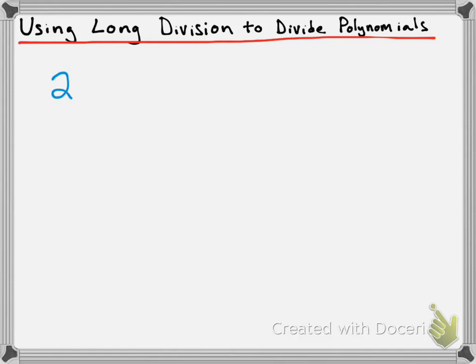Suppose for a second that we want to divide 2 into 4,347 using long division. You might remember the kind of process for this, but let me just refresh your memory. First thing we're going to do is take a look at the 2 and the 4 in front of 4,347, and we're going to say, how many times does 2 go into that 4? We know that it goes in twice, so we write that 2 up there.